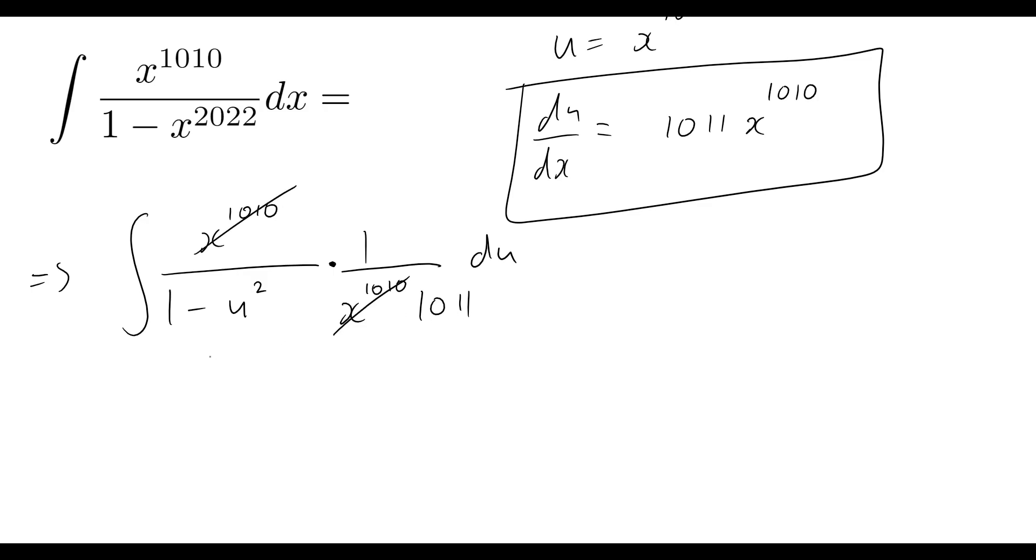Those will cancel out. We can bring that 1011 out the front. So now our problem simply becomes 1 over 1011 outside the integral of 1 over 1 minus u squared du.